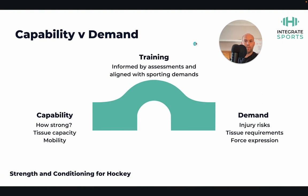Recapping capability versus demand in strength training: on the capability side, we ask how strong is the athlete, what capacity do the local tissues have — at-risk tissues in hockey like the calf, adductor, hamstring, and trunk muscles — and how much range of motion is available. Limited hip range means a back squat will put stress on other areas, probably the lower back. On the demand side, we understand injury risks, tissue requirements, and the force expected of an athlete, and the program bridges that gap safely and effectively.